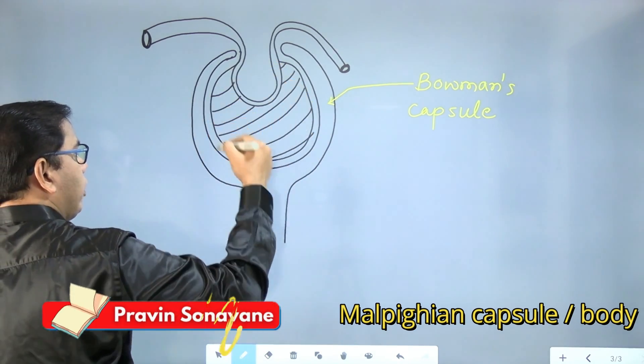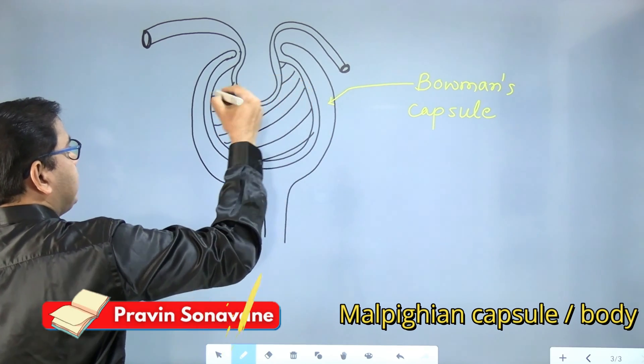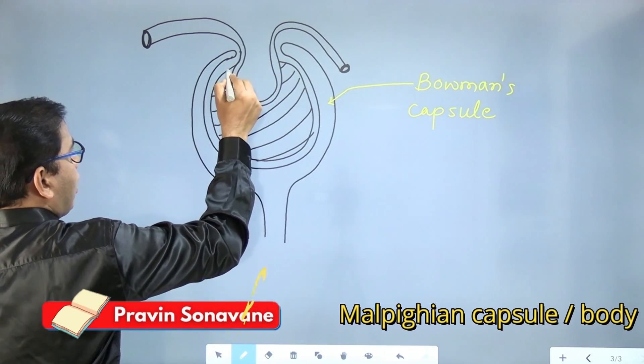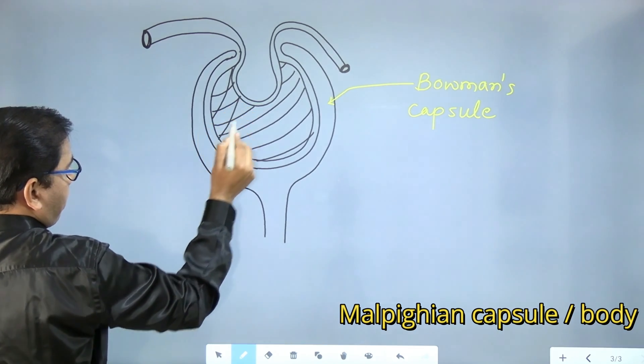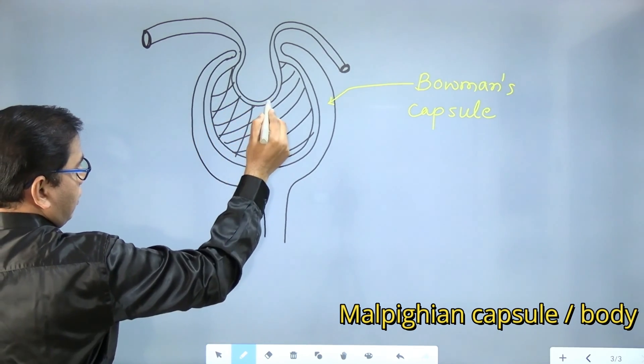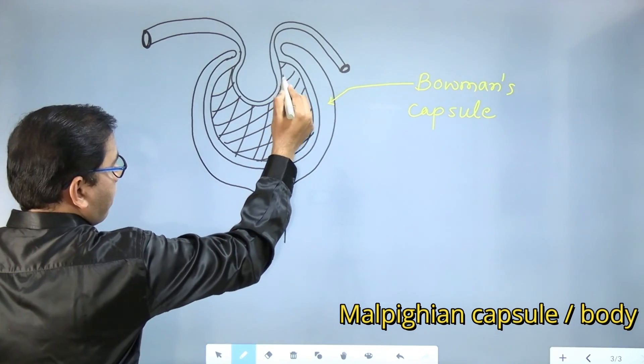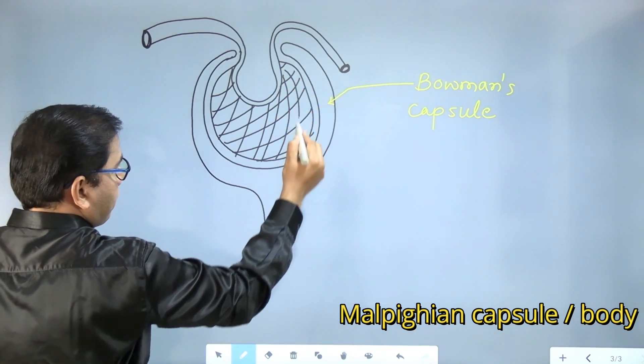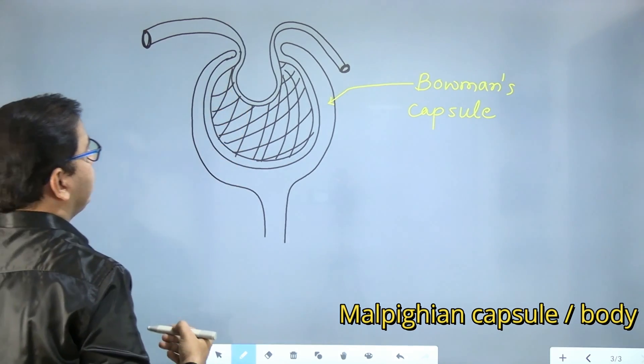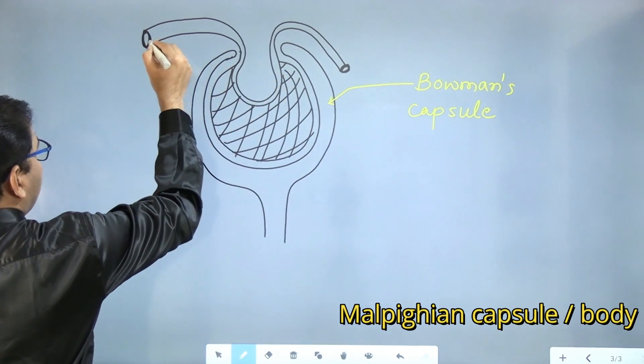First we will draw arcs in this direction. Now we will take these directions. Now it is looking like a pineapple. So this part is glomerulus.